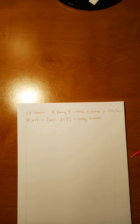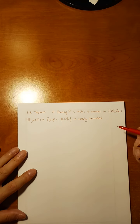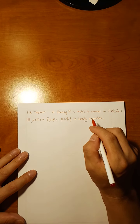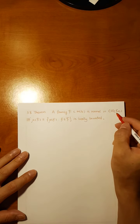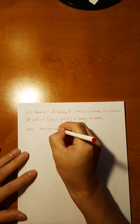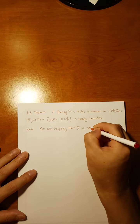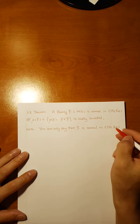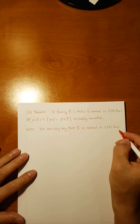We have an equivalent statement about the normality of family F in M(G). Notice that M(G) is not closed. So when we say F is normal, we can only say F is normal in C(G, C∞), because after you take the closure, it may not be completely contained in M(G) — it will be contained in C(G, C∞) only.